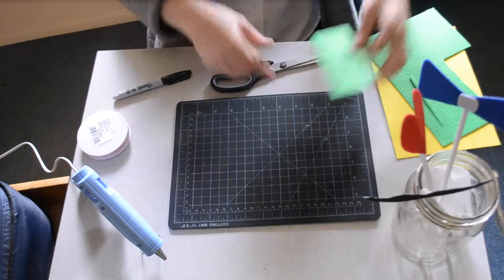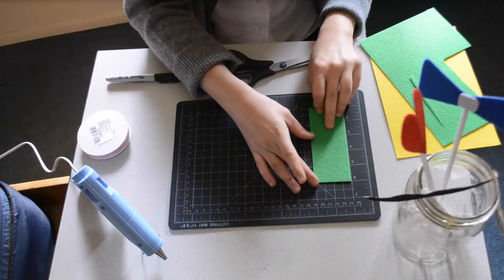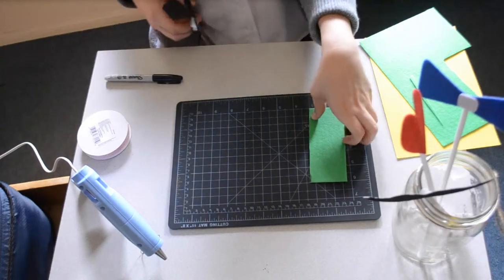So there I have my rectangle. We're going to lay it on here to make sure the measurements are good, and it looks like we can trim a bit more off.